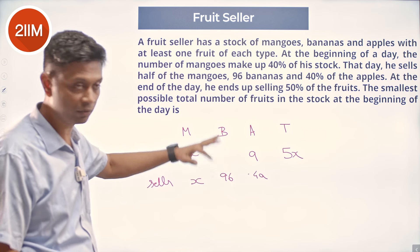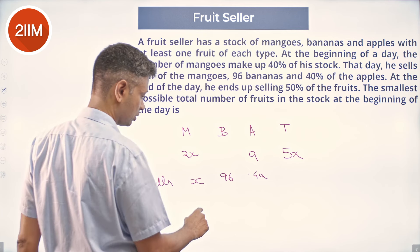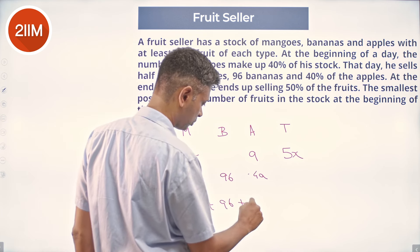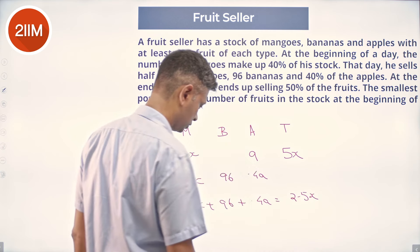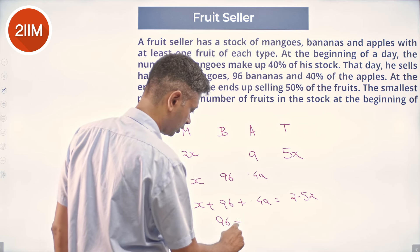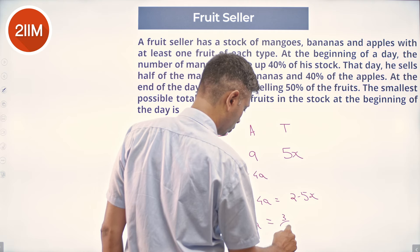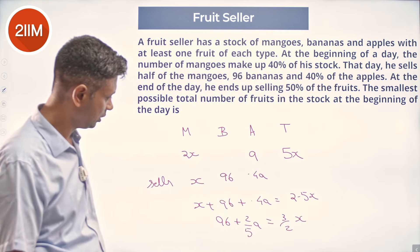This number should be more than 50%, and so x plus 96 plus 0.4a equals 2.5x. And so 96 plus 2/5a equals 3/2x.